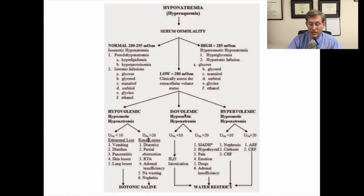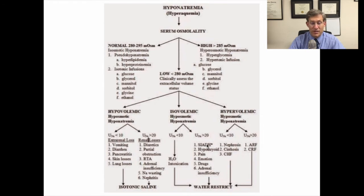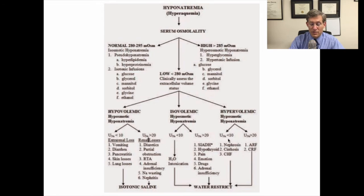In isovolemic hyposmotic hyponatremia, you need to determine if it's water intoxication or these classic other causes such as SIADH, hypothyroidism, and adrenal insufficiency. And again, using the urine sodium to determine if it's acute or chronic renal failure when urine sodium is elevated, or if there's a low urine sodium pointing to other etiologies such as cirrhosis and congestive heart failure.